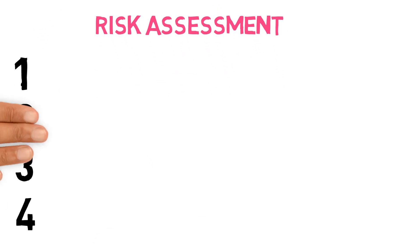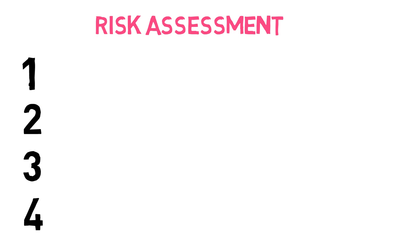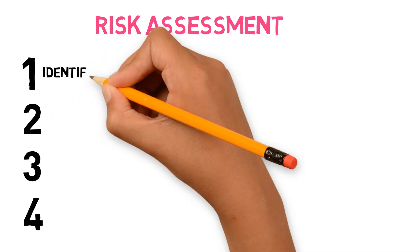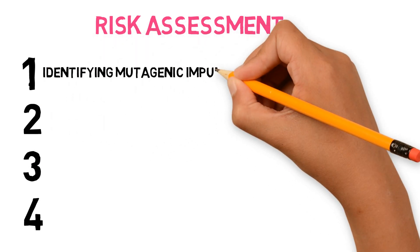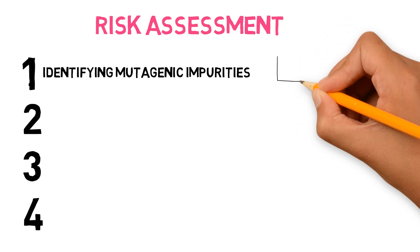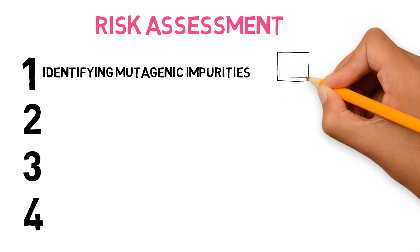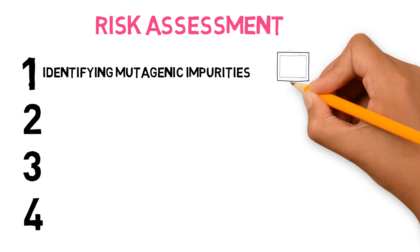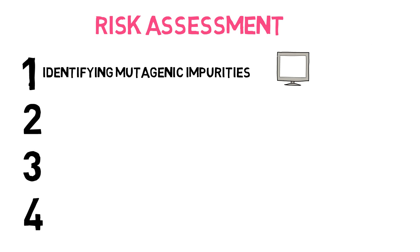The risk assessment consists of four stages. The first stage is identifying the mutagenic impurities. ICH M7 recommends the use of in silico tools for predicting the mutagenic potential, as long as two complementary systems are used: one expert-based and one statistical-based.